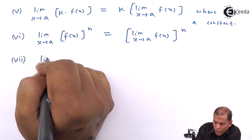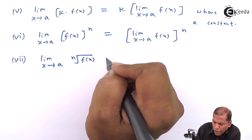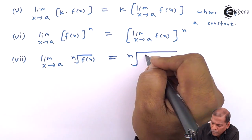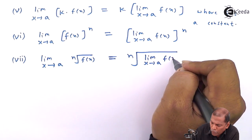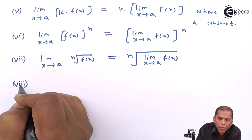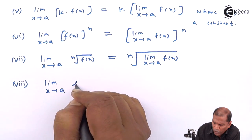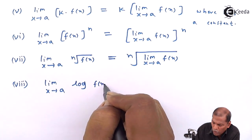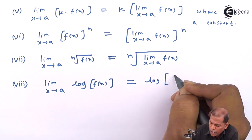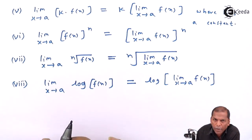Formula number seven: limit x tends to a of the nth root of f(x) is equal to the nth root of limit x tends to a of f(x). And the last formula, formula number eight: limit x tends to a of log of f(x) is equal to log of limit x tends to a of f(x).